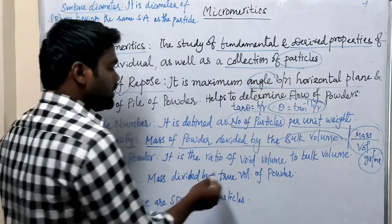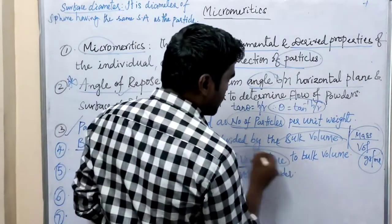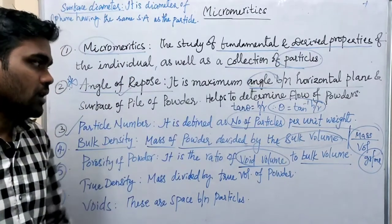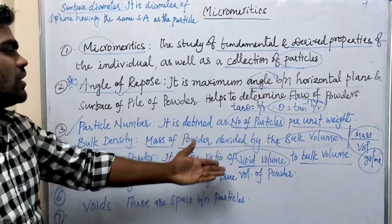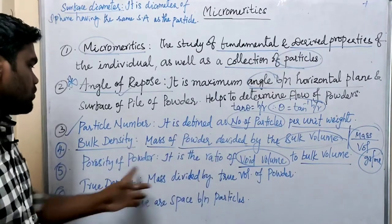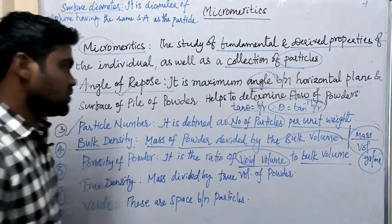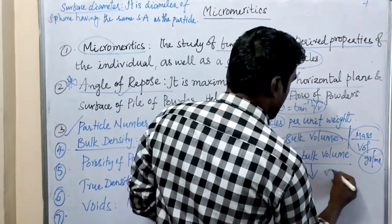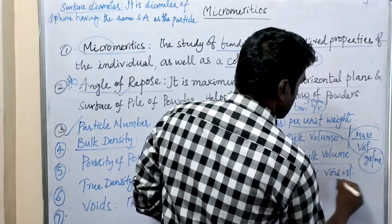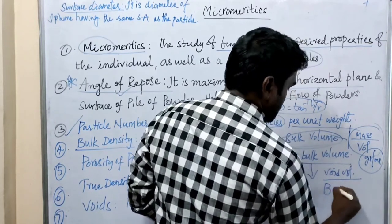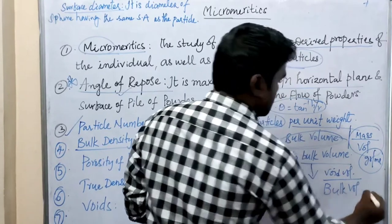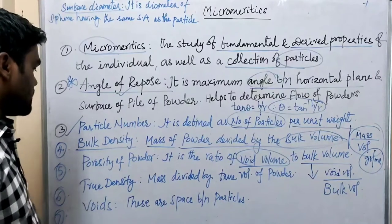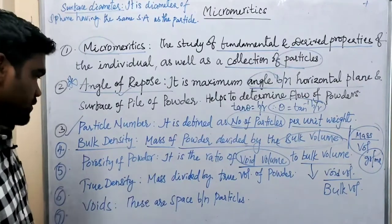Next, porosity of powder. It is the ratio of void volume to bulk volume, written as void volume divided by bulk volume. That is called the porosity of the powder.